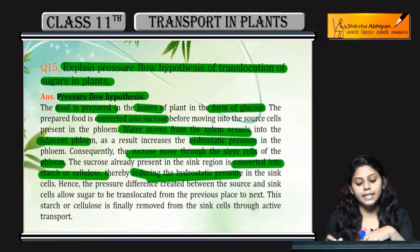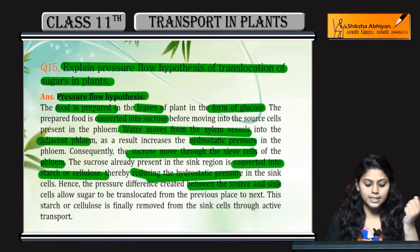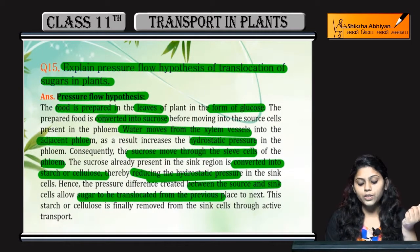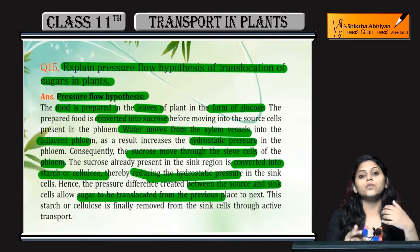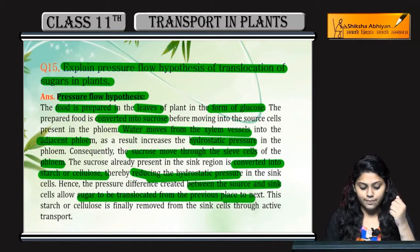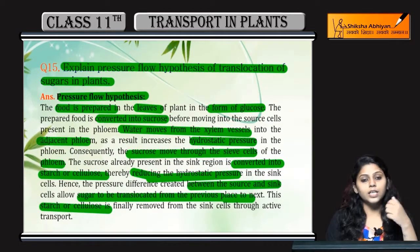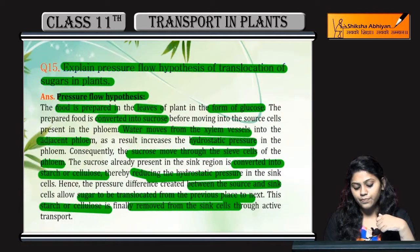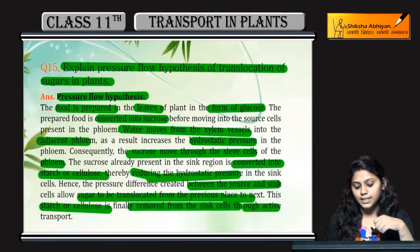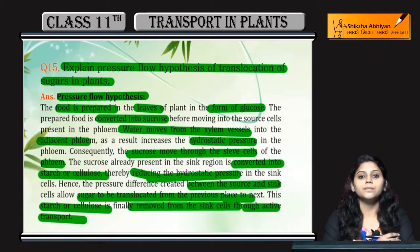Jo ye pressure difference create hota hai between source and sink — this allows sugar to be translocated from the previous place to the next place. This starch or cellulose is finally removed from the sink cell through active transport.